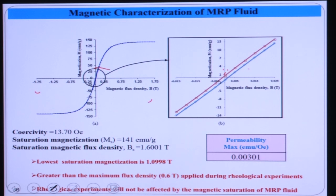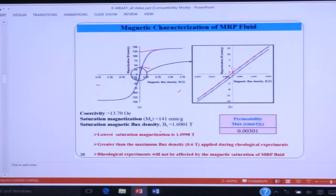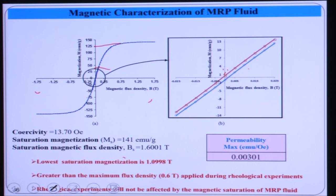The MRP fluid has a coercivity of 13.7, saturation magnetization of 141 Am²/kg, and a saturation magnetic flux density of 1.6 Tesla. The lowest saturation magnetization found across all experiments was 1.098, while we applied a maximum magnetic field of 0.6 Tesla, so our rheological experiments are not affected by magnetic saturation of the MRP fluid.